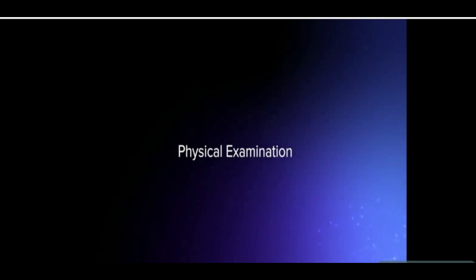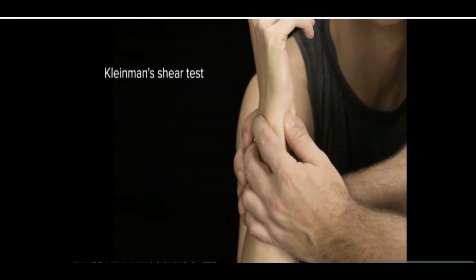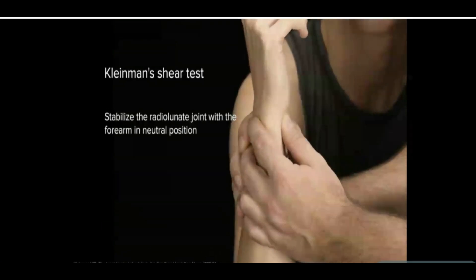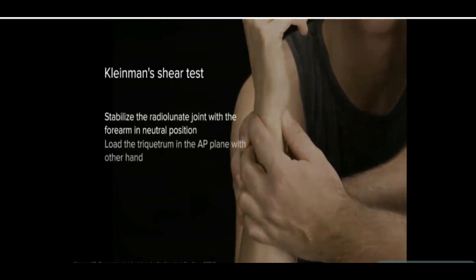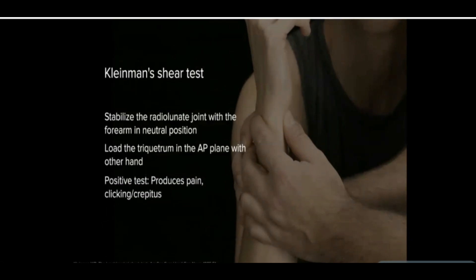However, many patients do not present with obvious clinical findings. Because of this, several provocative tests were designed to help diagnose lunotriquetral joint instability. The Kleinman shear test is perhaps the most sensitive. This maneuver is approached from the volar side, with a shearing vector across the lunotriquetral joint. If positive, the test results in crepitation or clicking, reproducing the patient's pain. It is compared with the opposite, uninjured wrist.